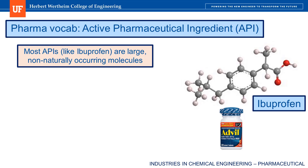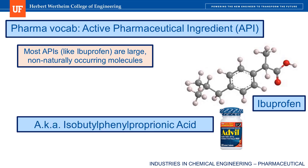This is the actual drug molecule that is included in medicines and medications. For example, ibuprofen is a popular pain-relieving API, and it's sold under several brand names including Advil. Looking at the molecular formula, you can see that it's a relatively large and unusual molecule, and I'm sure some laypeople are glad that we call it ibuprofen instead of its chemical name, which is isobutylphenylpropionic acid.